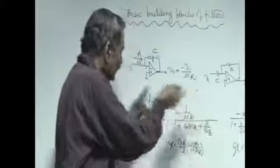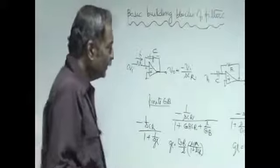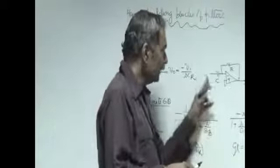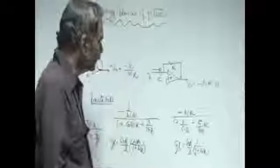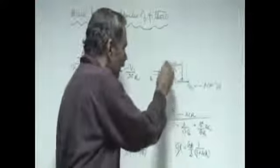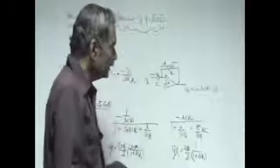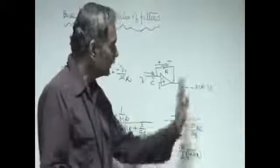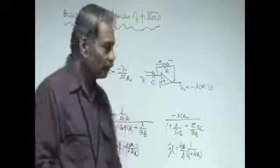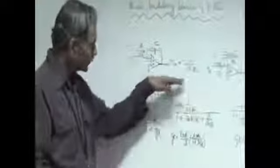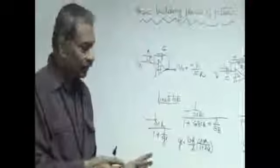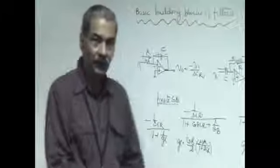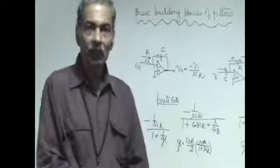Here the r and c are interchanged then the operation gets interchanged. Vi is driving a current in this which is Vi into sC and that current flows through this r and develops a voltage which is minus sCr into Vi and therefore it is differentiated. So now because of the finite gain bandwidth product, these blocks are going to have their behavior changed and that study is very important in deciding which building block is superior.